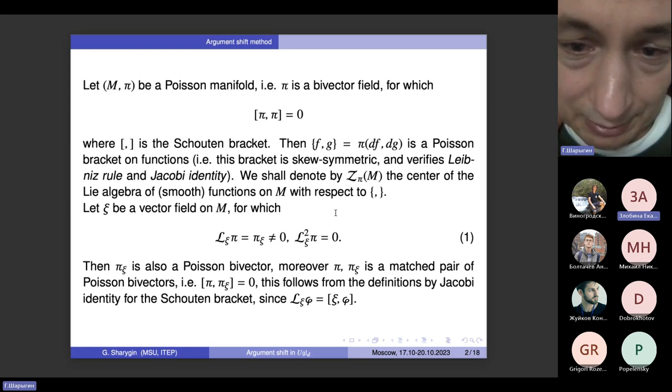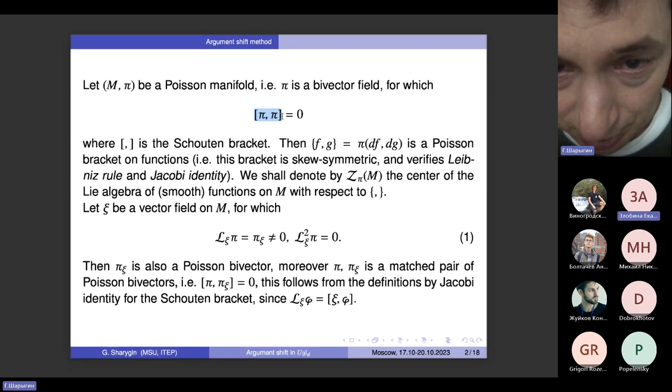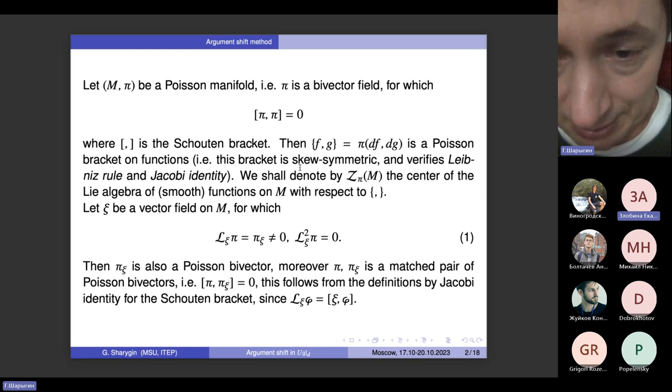In this case, we can define on the space of functions on M the Poisson bracket by the formula which is given here. We just plug in differentials of two functions f and g into the bivector pi, and by virtue of pi verifying this condition, this operation will actually verify the Jacobi identity. It will also be anti-skew-symmetric and will verify Leibniz rule.